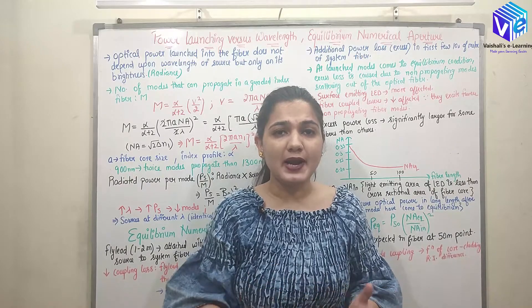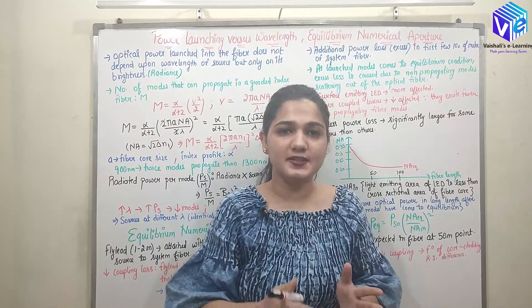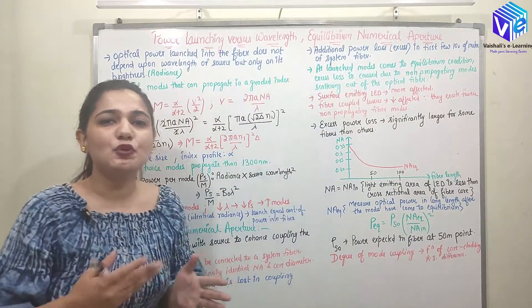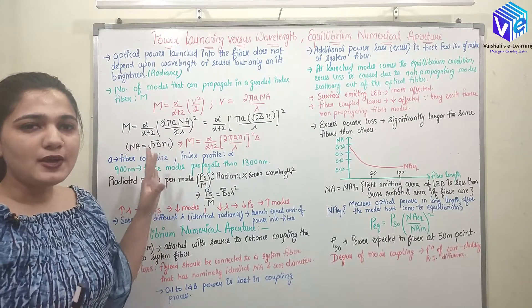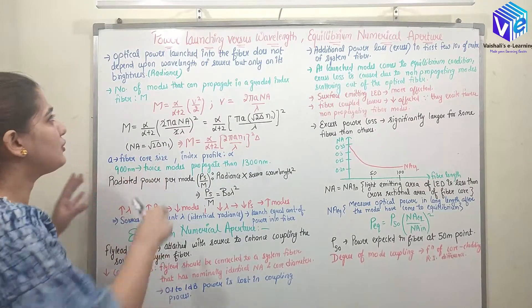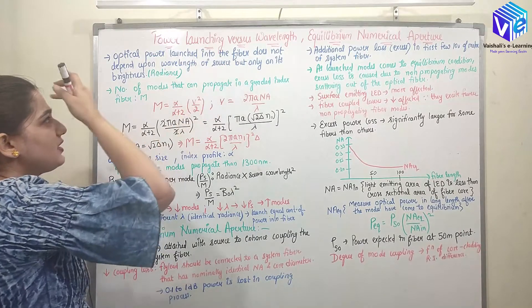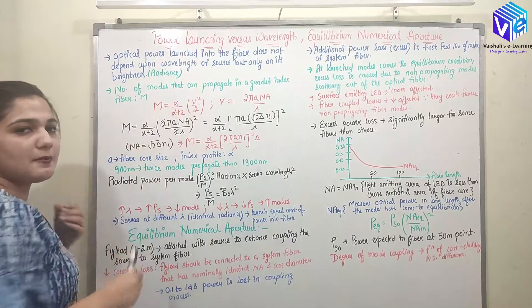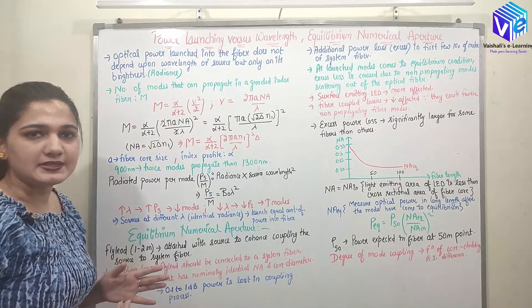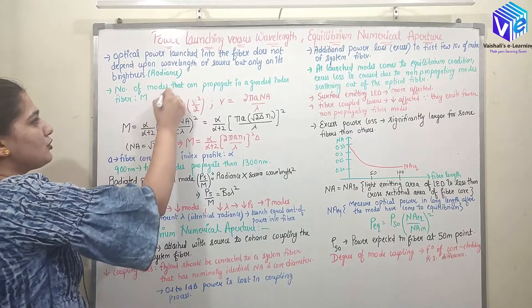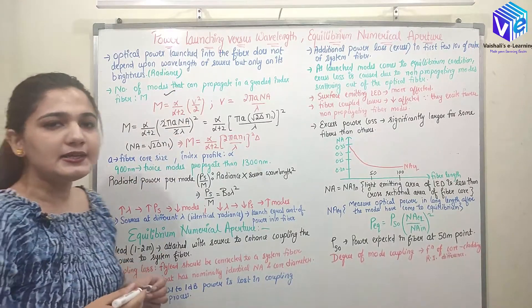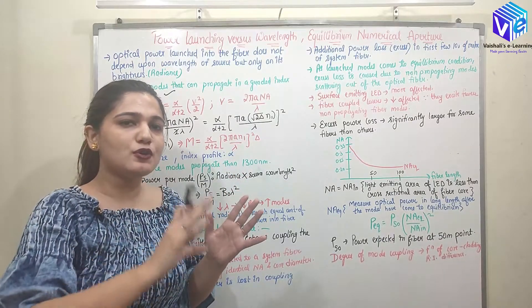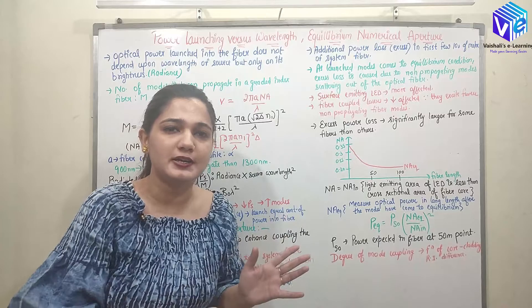Power coupling depends upon the brightness — that is, the radiance of the light. The optical power launched into the fiber does not depend upon the wavelength of the source but only upon its radiance. To prove this, we are going to use the number of modes that can propagate in a graded index fiber.